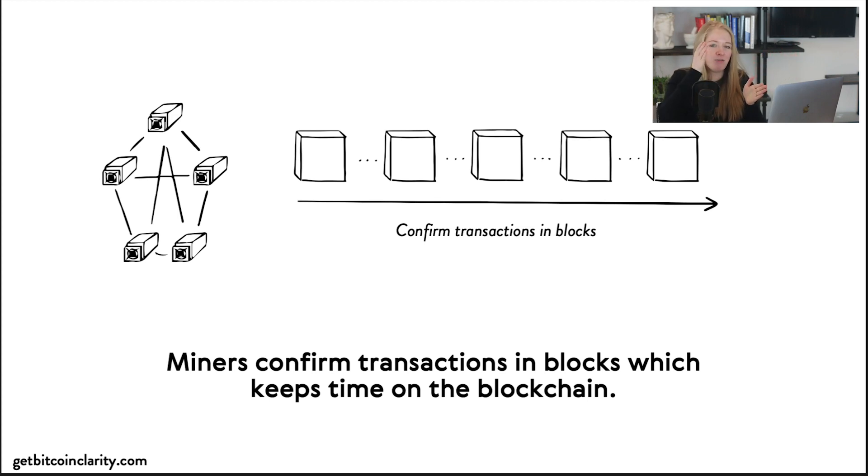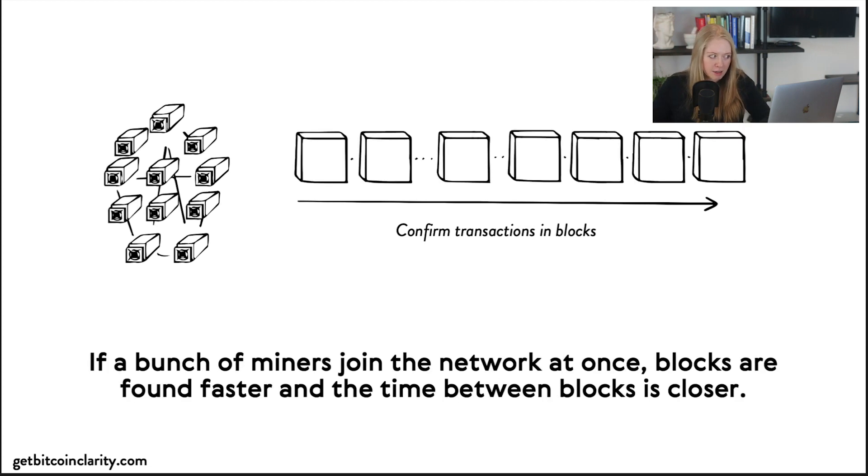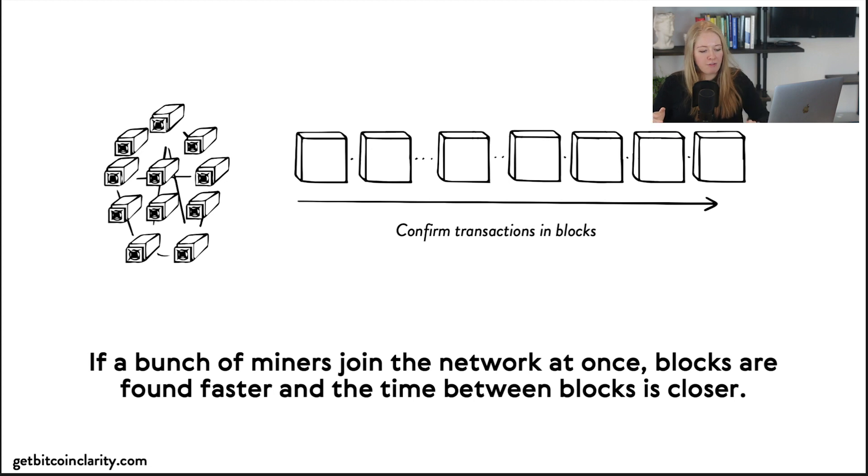But we know the network hash rate isn't stable. So if a whole bunch of computers join at once, well then you have blocks being found closer together. If a whole bunch of computers drop off at once, then you have the blocks being found further apart.